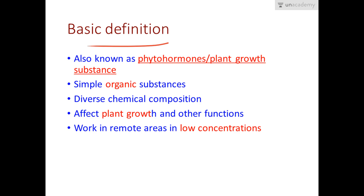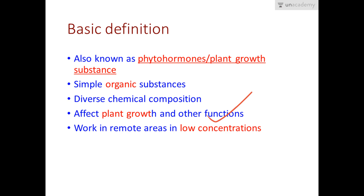First, we will talk about the basic definition of plant growth regulators. They are simple organic substances with diverse chemical compositions — different PGRs for different work, each with their own composition. They affect plant growth and other functions like cell division, cell enlargement, flowering, fruiting, seed formation, or even negative functions like dormancy and abscission.